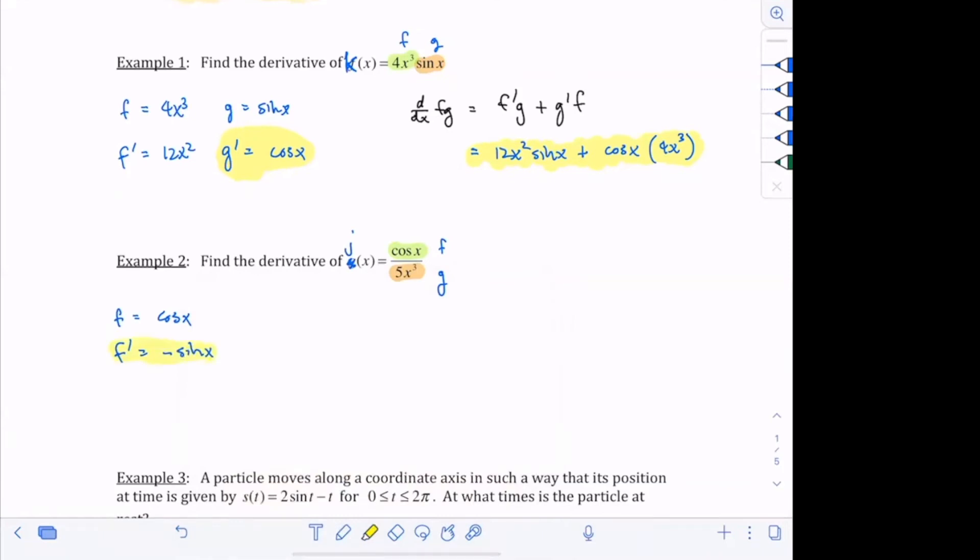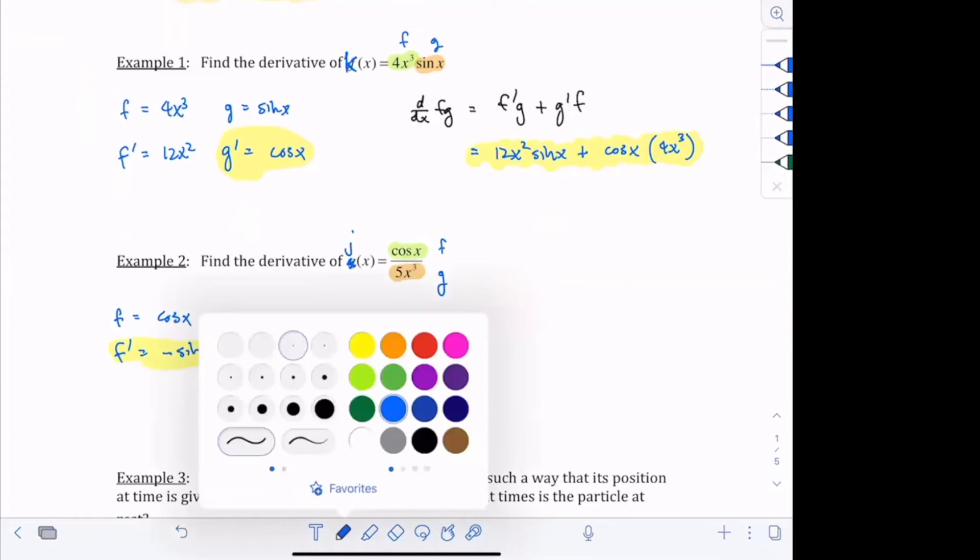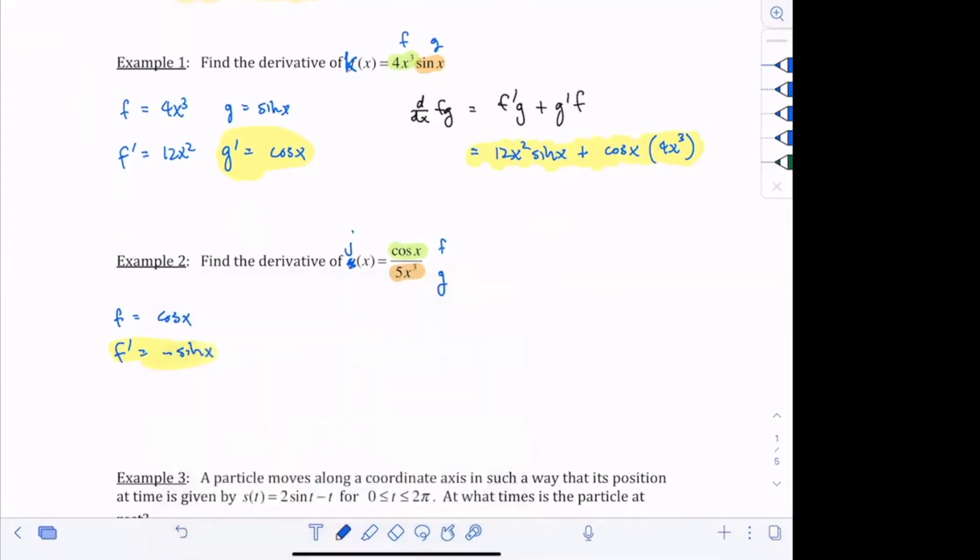Just this one little new thing. But we're practicing our quotient rule again. So our g of x is going to be 5x cubed. And then our g prime is going to be 15x squared.